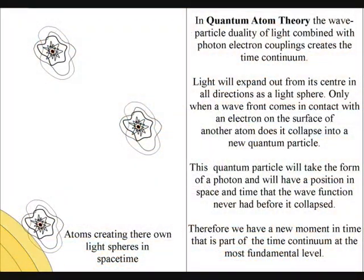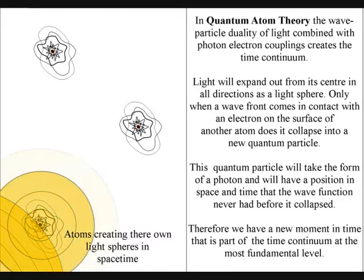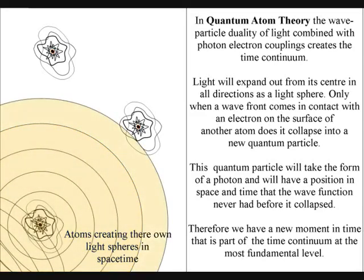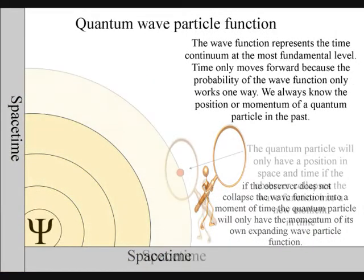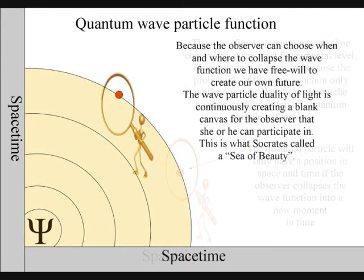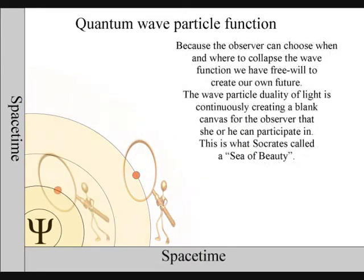Put very simply, the light emitted by an atom now is going to be absorbed by another atom later on, and this is the fundamental process that creates the time continuum. Every object in our universe will create its own time and space by collapsing the light waves of electromagnetic radiation into new quantum particles that will have their own position in space and time that the wave function never had before the collapse.